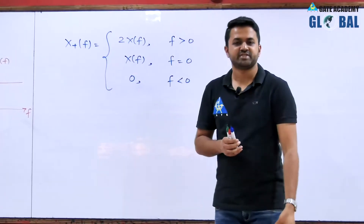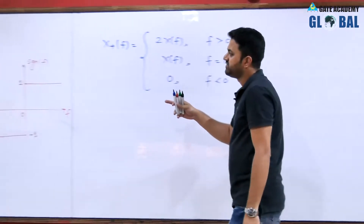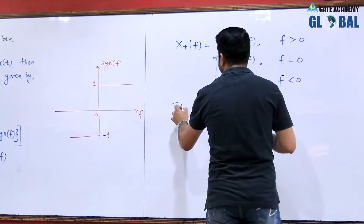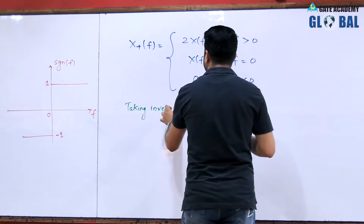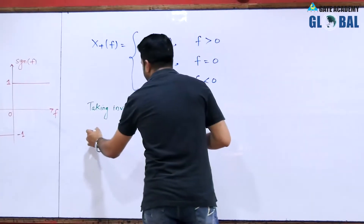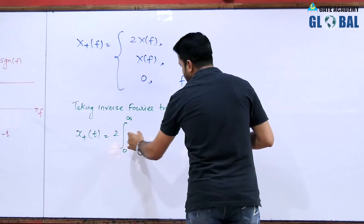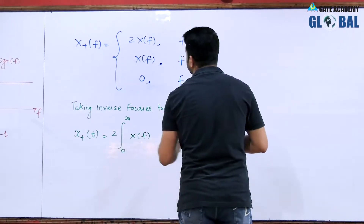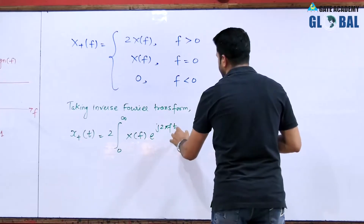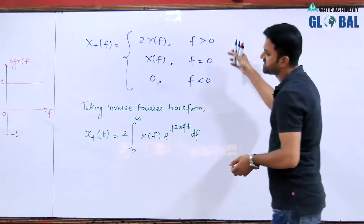This is the pre-envelope of signal x(t) in the frequency domain. After taking the inverse Fourier transform, we can get the pre-envelope in the time domain. Taking the inverse Fourier transform, x+(t) can be written as 2 times the integral from 0 to infinity of x(f) · e^(j2πft) df. This is the result for positive frequency.